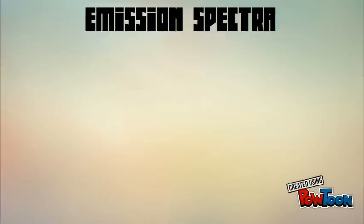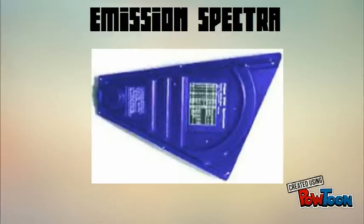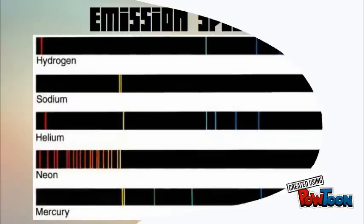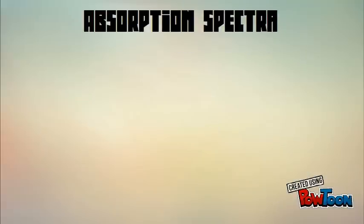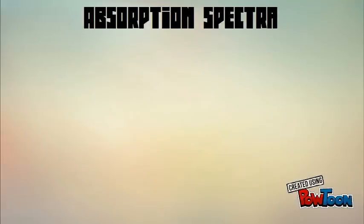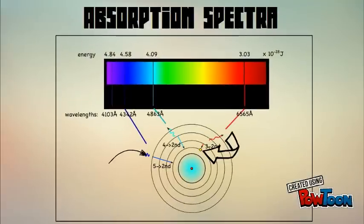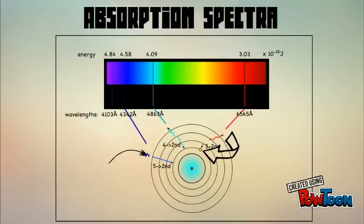Two applications of the Raman effect are emission spectra and absorption spectra. Emission spectra involves using a spectrometer to look at different colors of light emitted by an element. Absorption spectra is whenever an atom absorbs energy, the electrons get excited and jump in orbital, and when they relax,